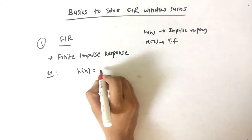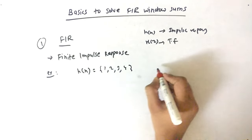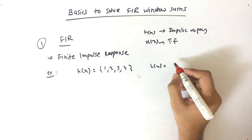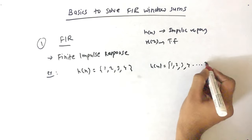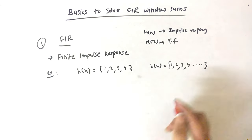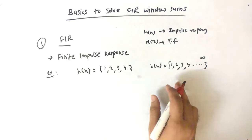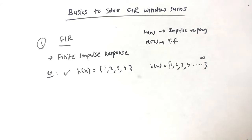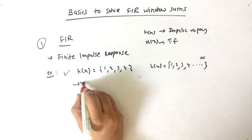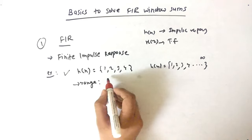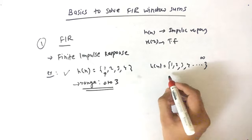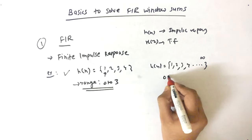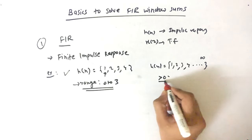Now H of N is given as 1, 2, 3, 4. While H of N is given as 1, 2, 3, 4 and so on up to infinity. So which one is Finite Impulse Response? This is the Finite Impulse Response because range is specified. Range is from 0 to 1, 2, 3. But here it is from 0 greater than 0, you don't know the range from A to B.